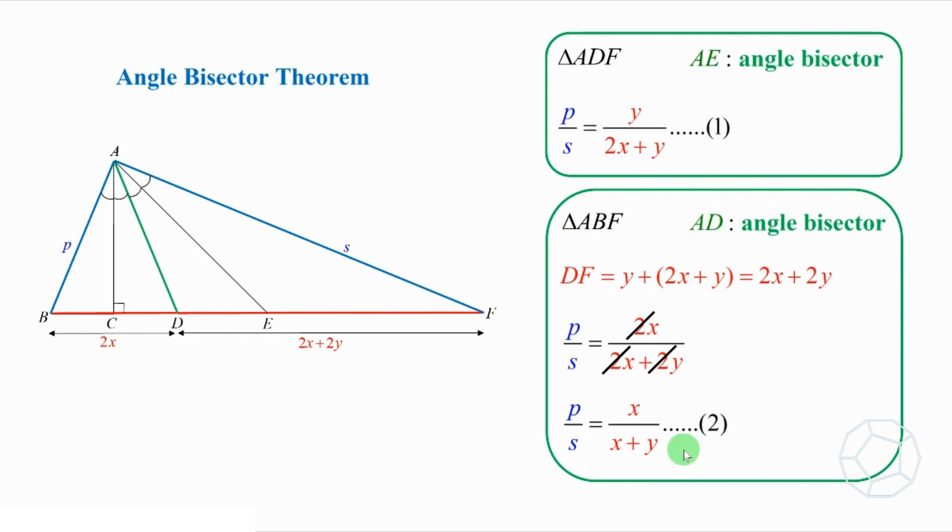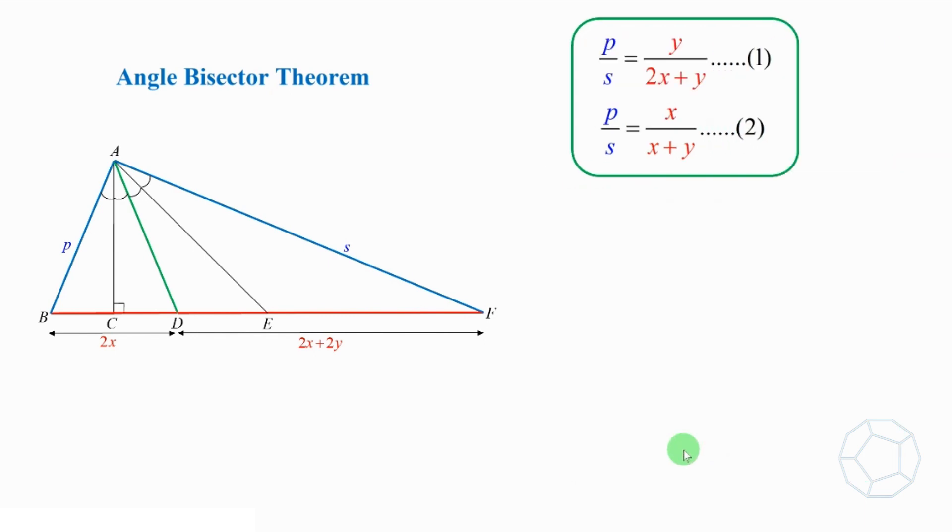There are so many unknown lengths. What can we do? Now, putting equation 1 into equation 2, then we get this. Cross multiply to get rid of the fraction. It becomes XY plus Y squared equals 2X squared plus XY. Cancel out XY on both sides, then Y squared equals 2X squared. Taking square roots, we have Y equals X times square root 2, or negative X times square root 2, which is rejected.